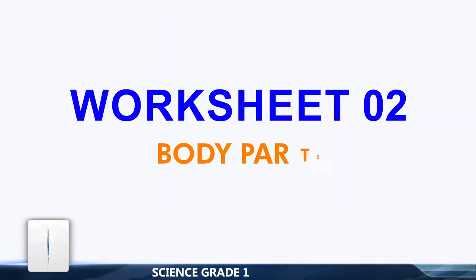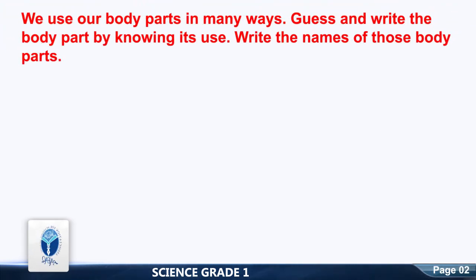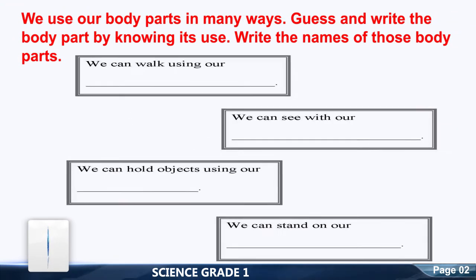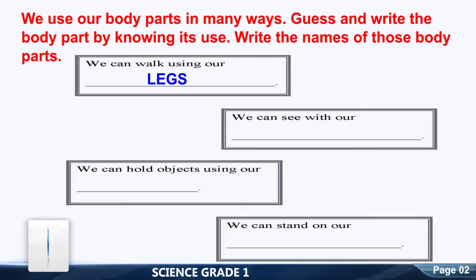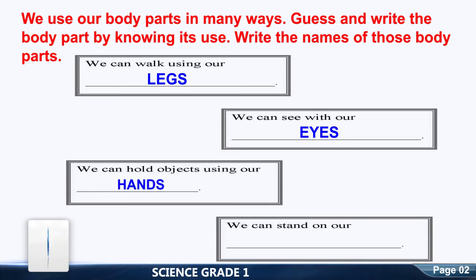Worksheet number 2: Body Parts. We use our body parts in many ways. Guess and write the body part by knowing its use. Write the names of those body parts. Yes, very good. We can walk using our legs. We can see with our eyes. We can hold objects using our hands. We can stand on our feet.